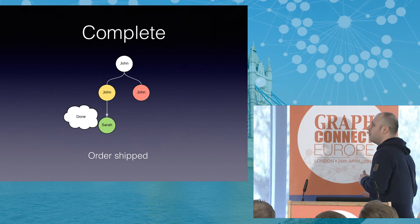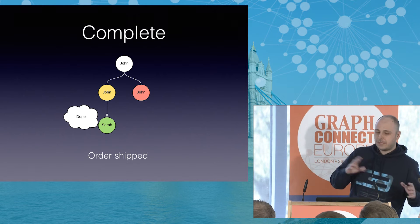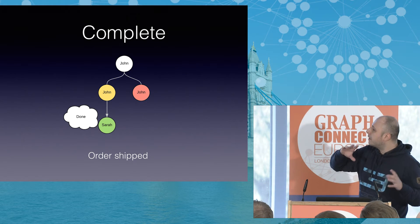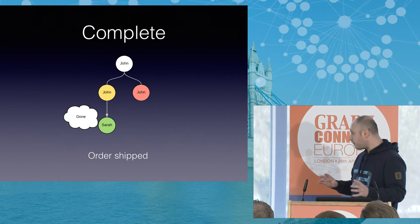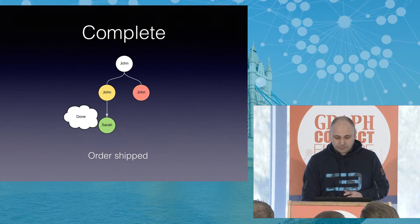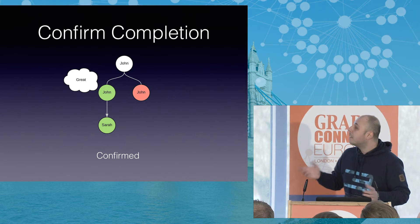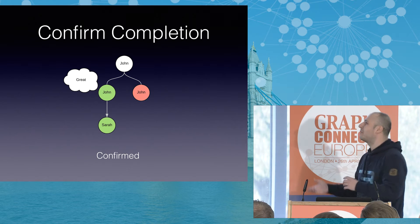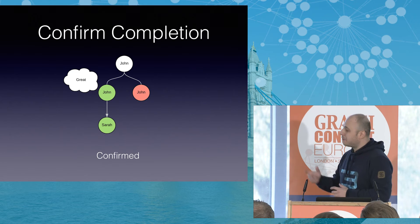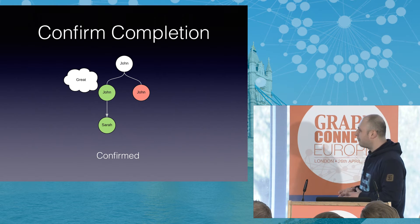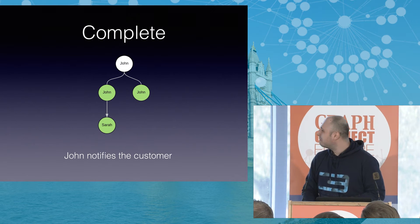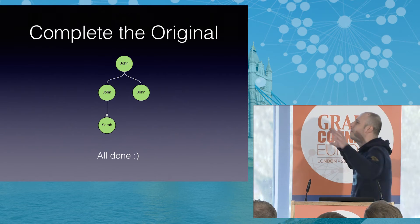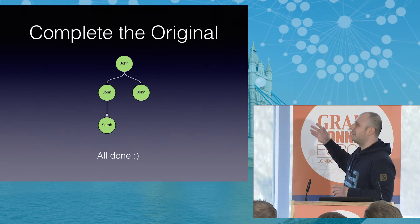Let's fast forward to Tuesday. Sarah has done the task, and now we enter another synchronization cycle. The system notifies John that the task is complete, so he needs to confirm completion. The other options are he could reject the completion and then there's another synchronization cycle, or he could again assign it to someone else. But he's happy with Sarah's job and confirms it, resolving the synchronization cycle. He does his job — he notifies the customer — and because all the split tasks are completed, the original task is completed itself.